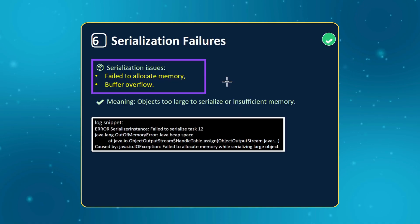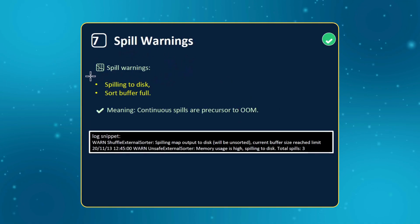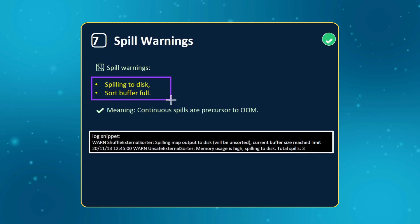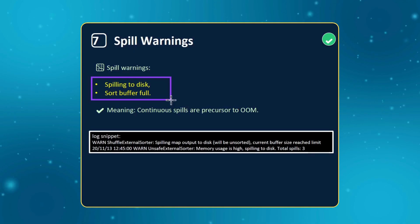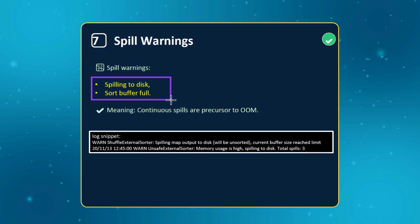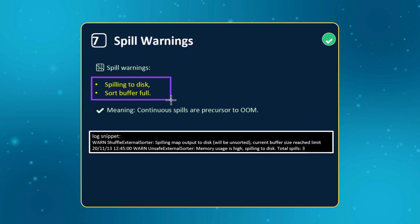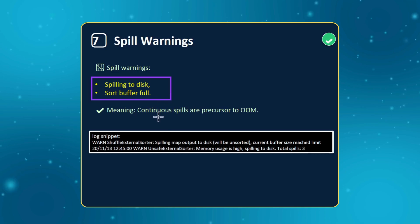The next thing is spill warnings. Most of the time you can find spill warnings in the Spark UI or even in the log files. Spilling happens when there is insufficient memory to store a block, so Spark spills it to disk. If you see very high spills in the Spark UI, you can clearly say it is an out of memory issue. However, even low spills can indirectly lead to out of memory issues, because memory may be filled with cache or other data structures. These continuous spills can ultimately lead to out of memory errors.